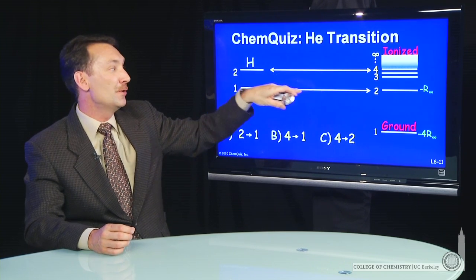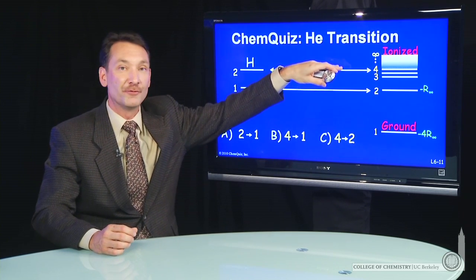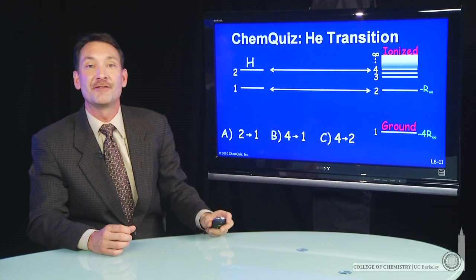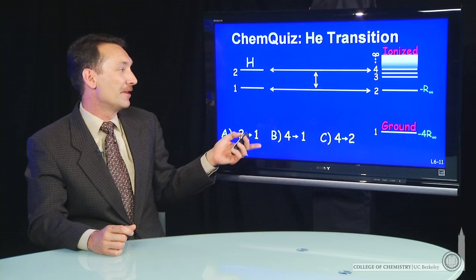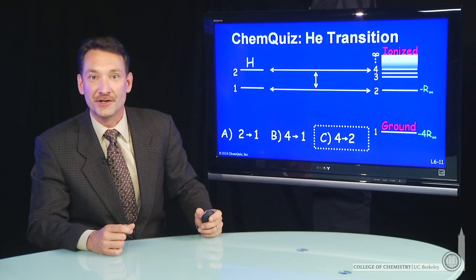The n equal 2 and n equal 1, n equal 4, and n equal 2 energy levels line up. So since those energy levels line up, the correct answer here is the 4 to 2 transition.